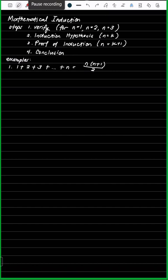It's better to do the steps with an example so it would be easier to understand. The mathematical statement here is: 1 plus 2 plus 3 plus dot dot dot plus n is equal to n multiplied by n plus 1 over 2.